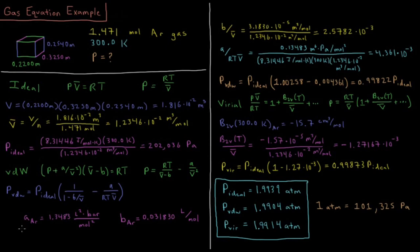If I look it up in a table, the Van der Waals A parameter for argon is 1.3483 liters squared bars per mole squared—unfortunate unit, we'll have to convert that. For B, the B parameter for argon is 0.031830 liters per mole. Again, I have to take care with the units. These are not SI units.